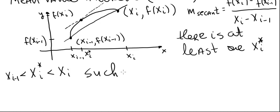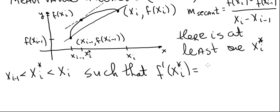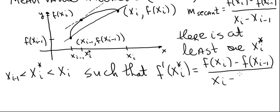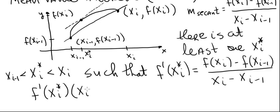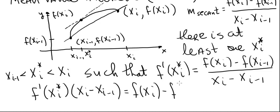Such that — as you can see from the picture — the slope of the tangent line, f prime of xi star, is equal to the slope of the secant line: f of xi minus f of xi minus 1, divided by xi minus xi minus 1. Usually we write it as: f prime of xi star times (xi minus xi minus 1) equals f of xi minus f of xi minus 1. That's the Mean Value Theorem, and we're going to need this result shortly.